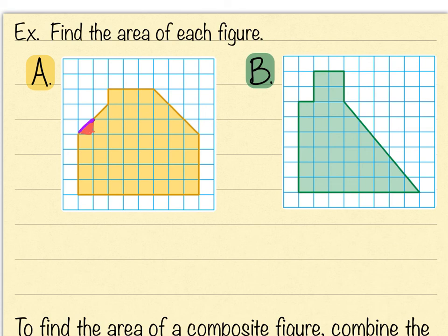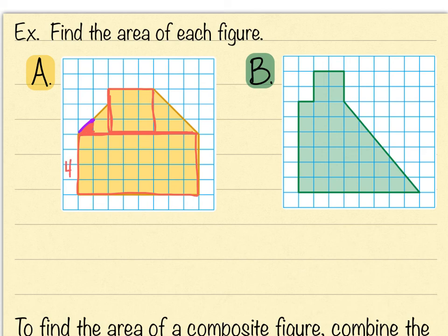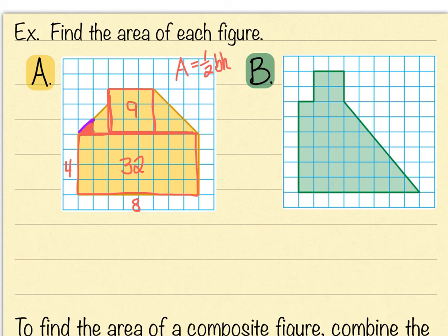For a shape like this, it's easier to split it into other shapes — that's what composite figures are. Drawing a few lines, I can split this shape into a rectangle, a square, and two triangles. The rectangle is four wide and eight long, giving 32 squares. The square is three by three, giving nine squares. For the two triangles, counting the squares: one full square, then two halves make one whole — so two squares in one triangle — and then one, two, three full squares plus two halves makes four and a half squares in the other.